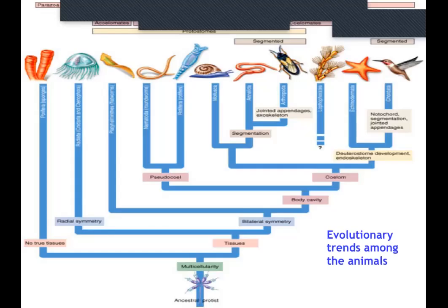We've been talking about animal diversity — there are all sorts of animals, and a lot of them are worms. Most of them are invertebrates, meaning they don't have a backbone. We've talked about the simplest animals, which were sponges that had no symmetry. Then we moved to jellyfish, which had radial symmetry — you can divide them in any direction. They had stinging tentacles and a mouth and anus that was the same hole.